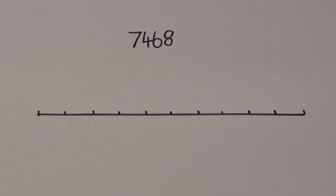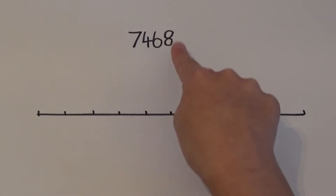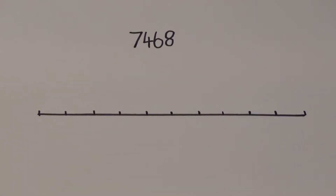Let's start by rounding it to the nearest ten. When we're rounding to the nearest ten, we only need to look at the tens and the ones column to start with. The tens and ones column is sixty-eight, so we need to work out which multiples of ten sixty-eight falls between.